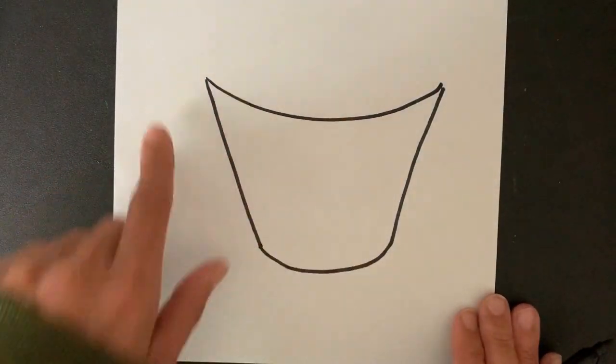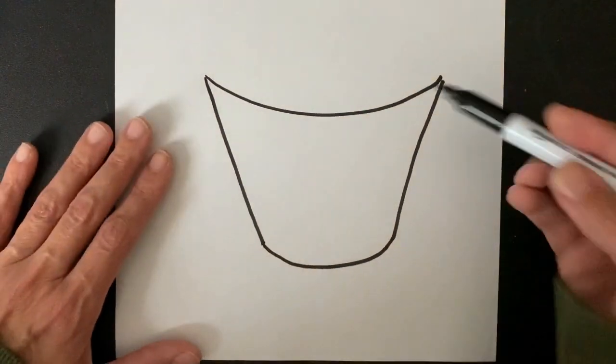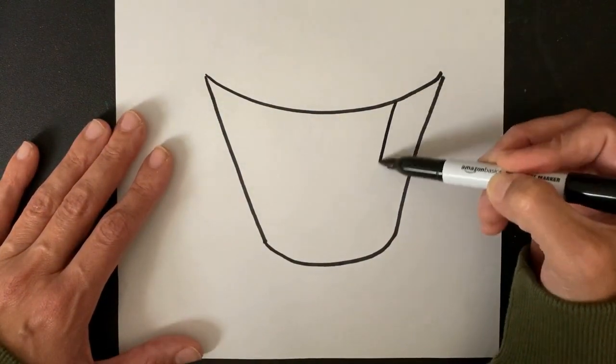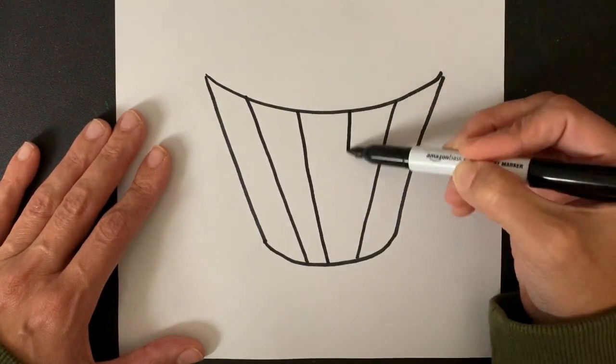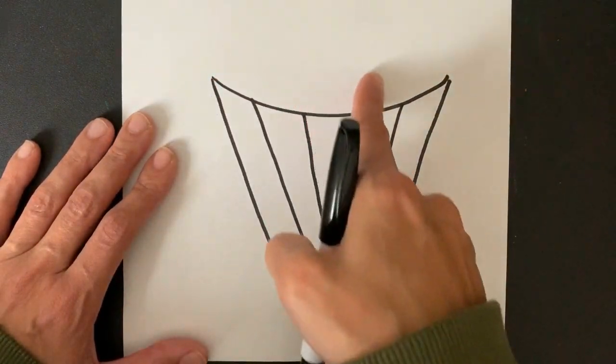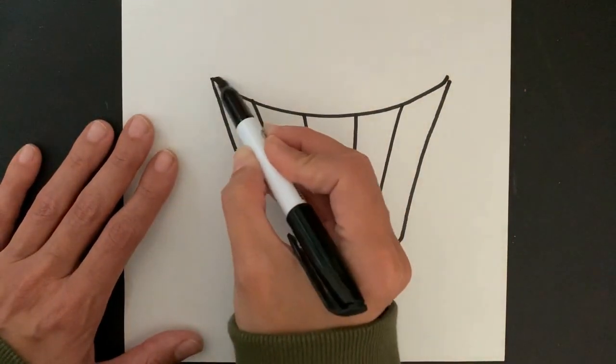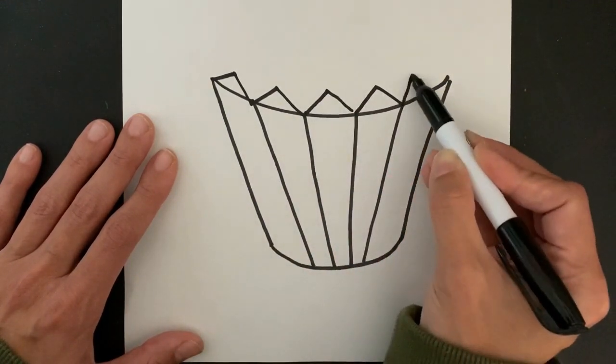The next thing we're going to do is create some lines that are somewhat vertical, but just like our first two lines they kind of angle downwards like so. And in between these lines we're now going to draw a zigzag line, or you can pretend like you're adding triangles.